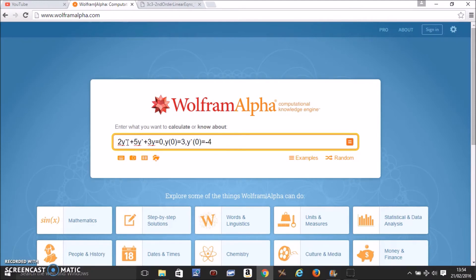y double prime means d squared y over dx squared, if that's what is written in your example. And you just come at the beginning and type solve. You come at the end and press equals.